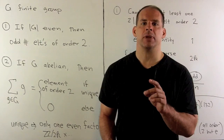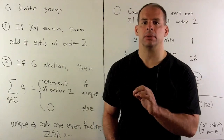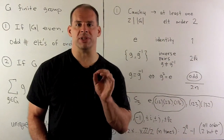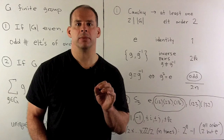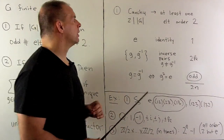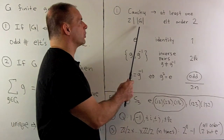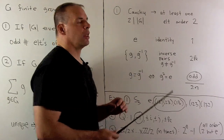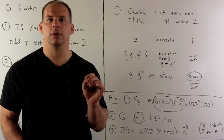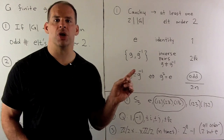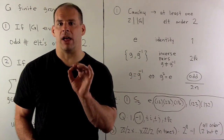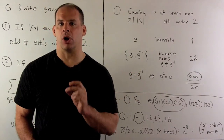Now let's look at the first problem. Since the order of our group is even, a special case of Cauchy's theorem says: since 2 divides the order of the group, there's going to be at least one element of order 2. So what we're going to show is there's an odd number of elements of order 2 in our group.